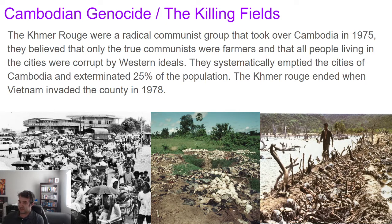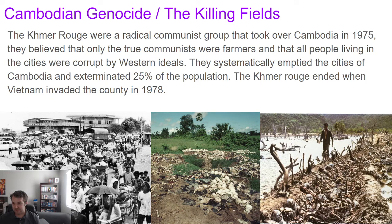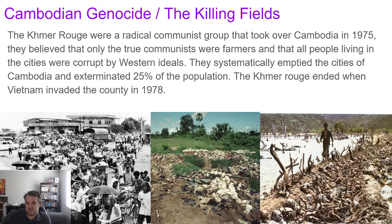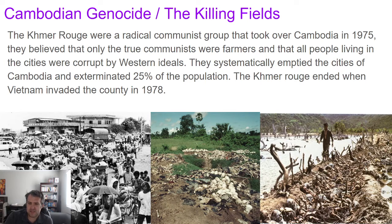25% of the population of Cambodia was killed during this three-year period. The Khmer Rouge ended when Vietnam invaded the country in 1978 and discovered empty cities. Survivors explained they had been forced out and many killed by the Khmer Rouge. This genocide wasn't really about religion — it was about political ideals, an extreme version of communism that thankfully no other country has replicated. It's a harsh lesson that some who claim to bring equality can instead deliver equal misery and suffering.